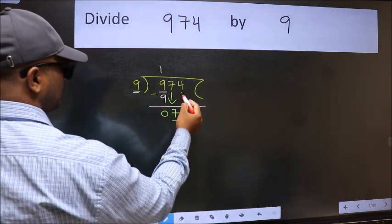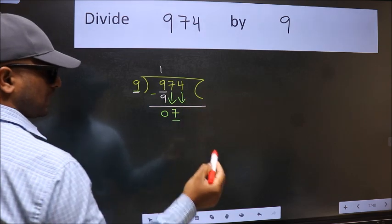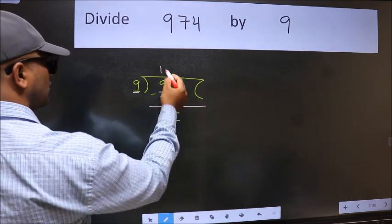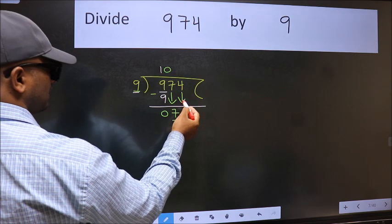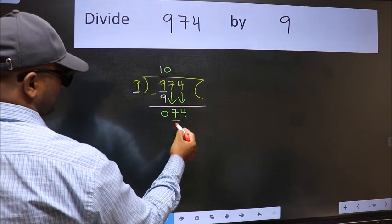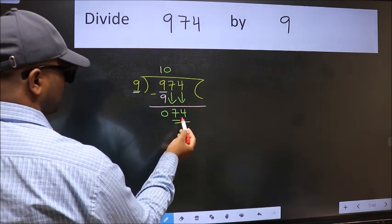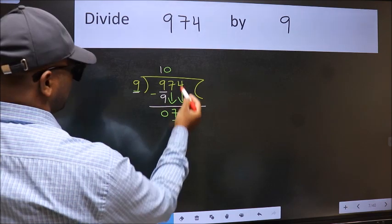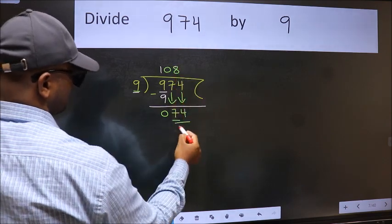And the rule to bring down the second number is we should put zero here. Then only we can bring this number down. Now 74, a number close to 74 in nine table is nine eights 72.